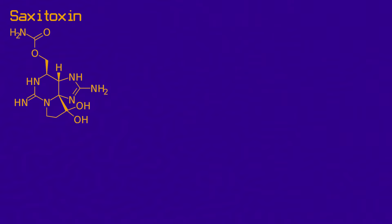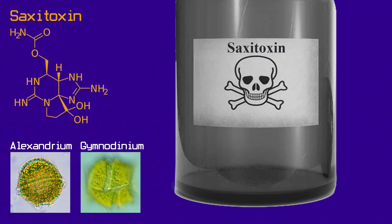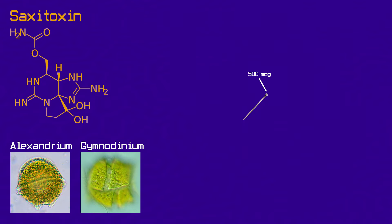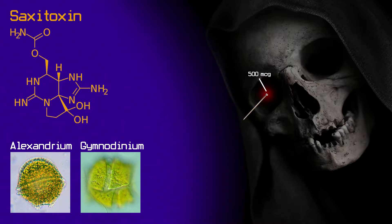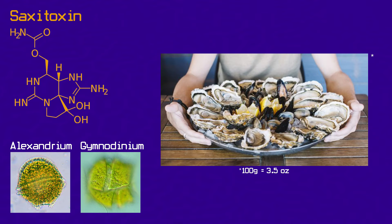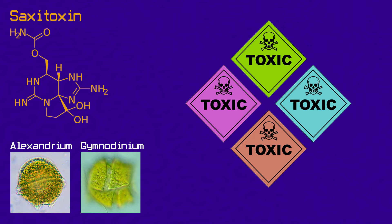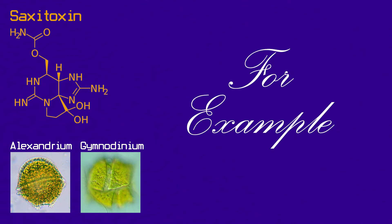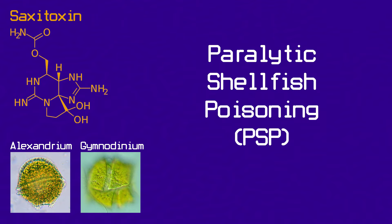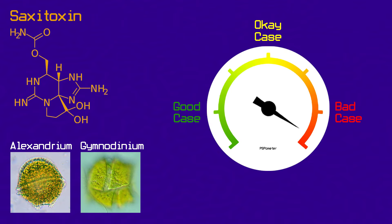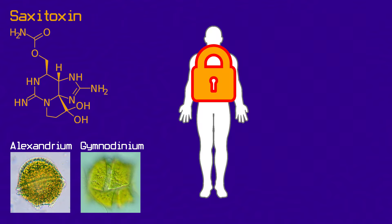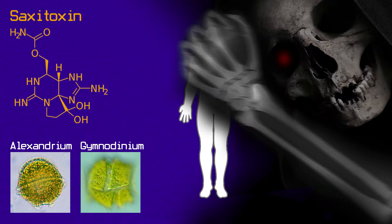But these neurotoxins are so potent that it doesn't take much to kill us. The toxin saxitoxin, produced by dinoflagellates like Alexandrium and Gymnodinium, is 1,000 times more potent than cyanide. A pinhead-sized quantity of about 500 micrograms can easily kill you, and that amount can accumulate in about 100 grams of shellfish, no problem. The different toxins produced by different dinoflagellates result in different kinds of poisonings. For example, saxitoxin results in paralytic shellfish poisoning, and in case you couldn't tell from the name, if you get a bad case of PSP, you become paralyzed. Your whole body locks up, including your diaphragm, and you suffocate to death.